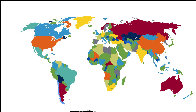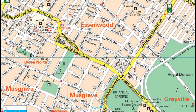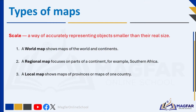You can't see things like rivers, cities, hospitals and roads. Check out this map — it's a large-scale map and it shows a small area with lots of details. A scale is a way of accurately representing objects smaller than their real size. There are three main types of maps in an atlas: world, regional and local maps.